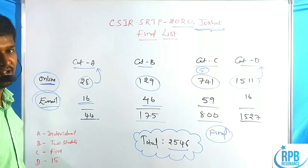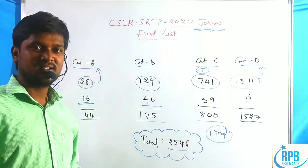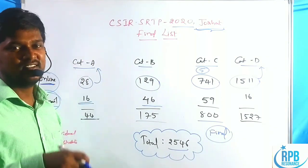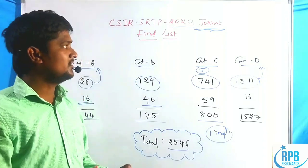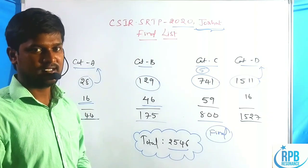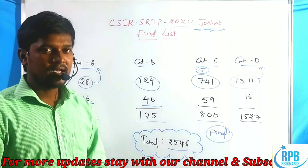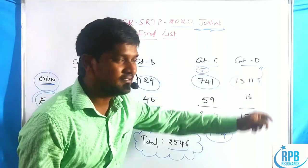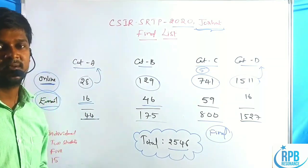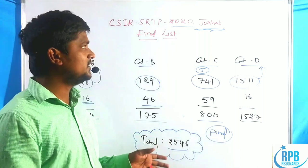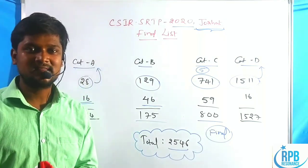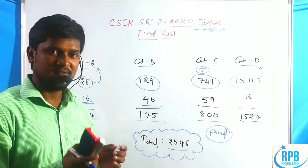If there are any further updates on the next CSIR SRTP program, I will give the official website link in the description box. Please visit and check your details. I will share immediate updates through my RPV Resonance YouTube channel. Category A, B, C, and D curriculum details are in my previous video — that link is also in the description box below. If you like the video, please share, like, and comment. Subscribe to the channel. Thank you for watching.